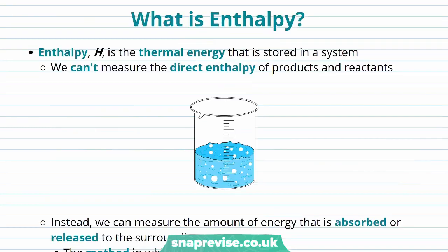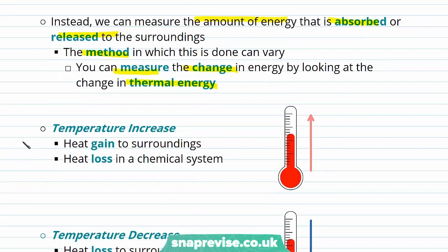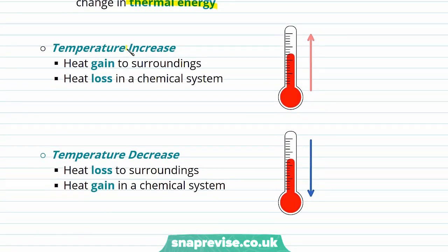Let's take a look at what enthalpy is. Enthalpy, for which we use the symbol capital H, is the thermal energy stored in a system. We can't measure the direct enthalpy of products and reactants, so instead we measure the amount of energy absorbed or released to the surroundings. One way to do this is to measure the change in thermal energy by monitoring the temperature change. A temperature increase indicates a heat gain to the surroundings and therefore a heat loss in our chemical system.